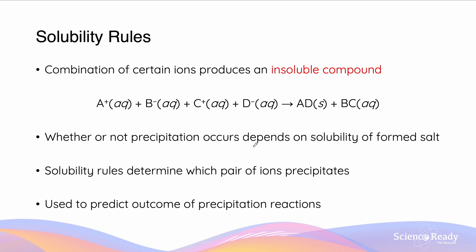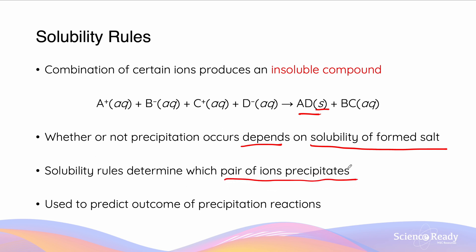Whether or not a precipitation occurs will depend on the solubility of the formed salt. In this case, when we react all of these ions together, AD has low solubility, hence why we describe it as being insoluble and it is in the solid state. BC however is aqueous and thus remains in its ionized form in water. The solubility rules determine which pair of ions precipitate and we can use them to predict the outcome of a precipitation reaction.